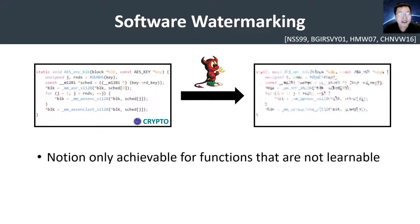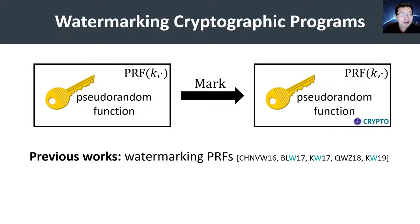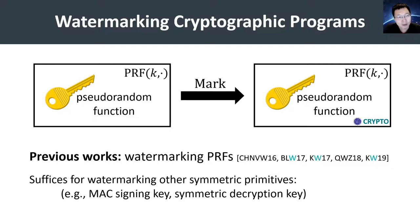These two requirements together are sufficient to show that watermarking is only achievable for functionalities that are not learnable. As such, the study of software watermarking has primarily focused on watermarking cryptographic functions, a natural class of non-learnable functions. Many previous works have focused on watermarking pseudorandom functions, or PRFs, where the program has hardwired inside it the key for a pseudorandom function, and on input x, outputs the evaluation of the pseudorandom function on x. This is useful because PRFs are the workhorses of symmetric cryptography, and once we can watermark a PRF, we can use it to watermark the signing key for a message authentication code, or the decryption key in a symmetric encryption scheme.